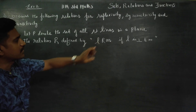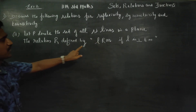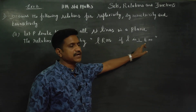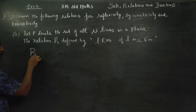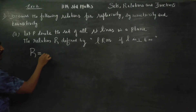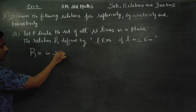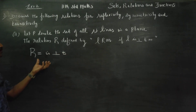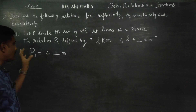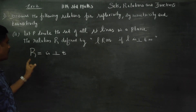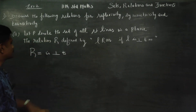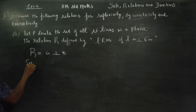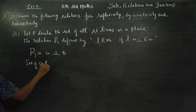P denotes the set of all straight lines in a plane. The relation R is defined by: L is perpendicular to M. R means 'is perpendicular to' — it is a symbol. We have a set of straight lines on a plane.